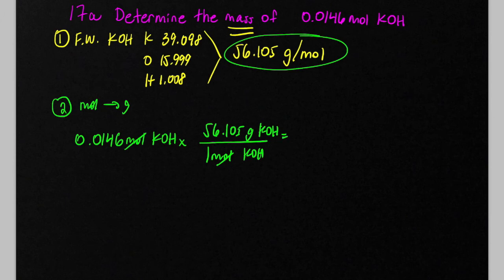And so on our calculator here, we would punch in 56.105 times 0.0146, and we would want to round this to three significant figures, 0.819 grams of KOH.